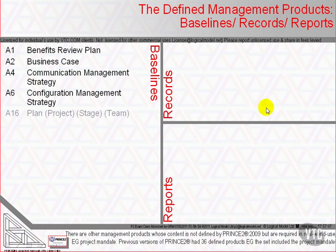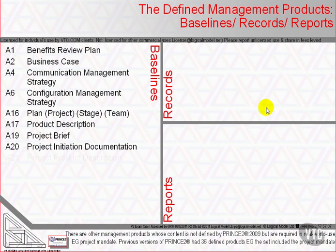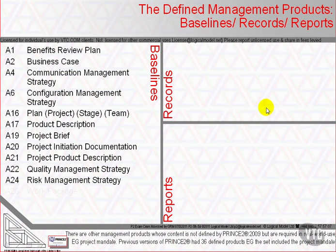Here are three important definitions. Baselines are those that define aspects of the project and, once approved, are subject to change control. All of them except the team plan are baselined by approval from the project board in a DP activity.